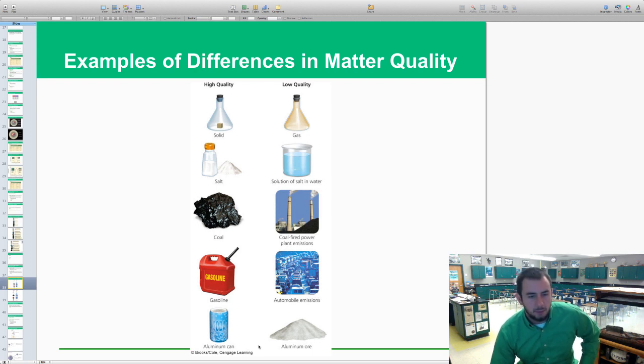Aluminum can is high quality. Aluminum ore, which has other materials and elements in it, would be lower quality. Those are a couple examples for you.